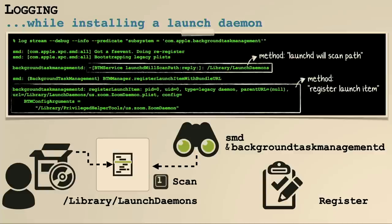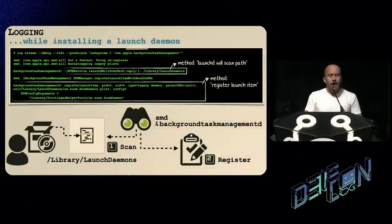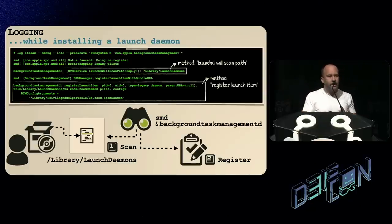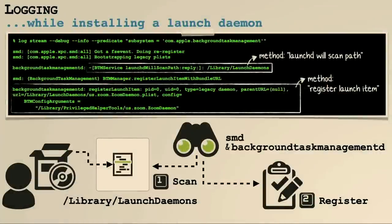Now that we have logging on and running, we install a launch daemon — a persistent component — and then look in the logs to see what is shown. On the slide we can see a few very interesting log messages directly related to the BTM subsystem. We're going to take these log messages, find the binaries responsible for generating them, and look at their disassembly to figure out exactly what's going on. They are great signposts.